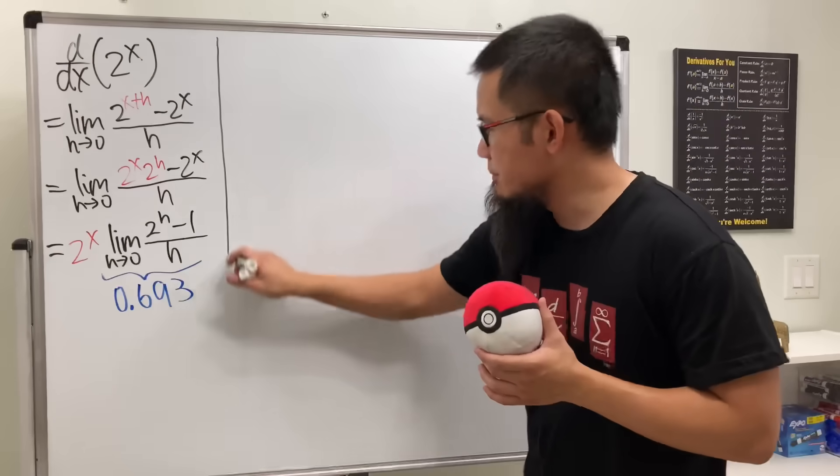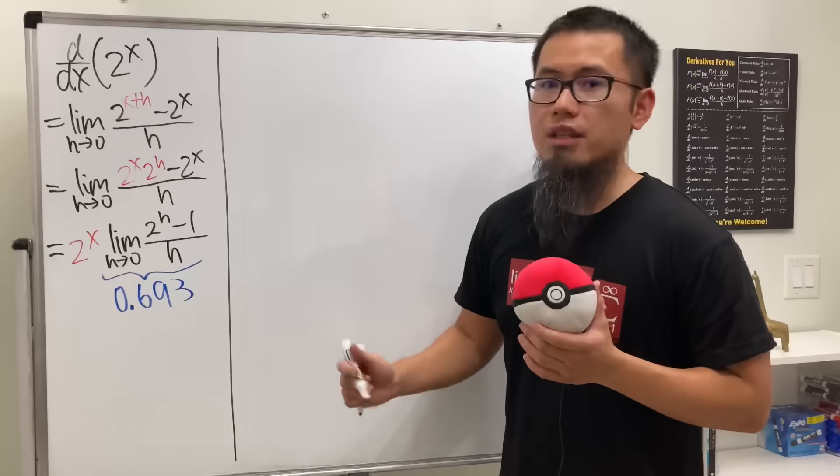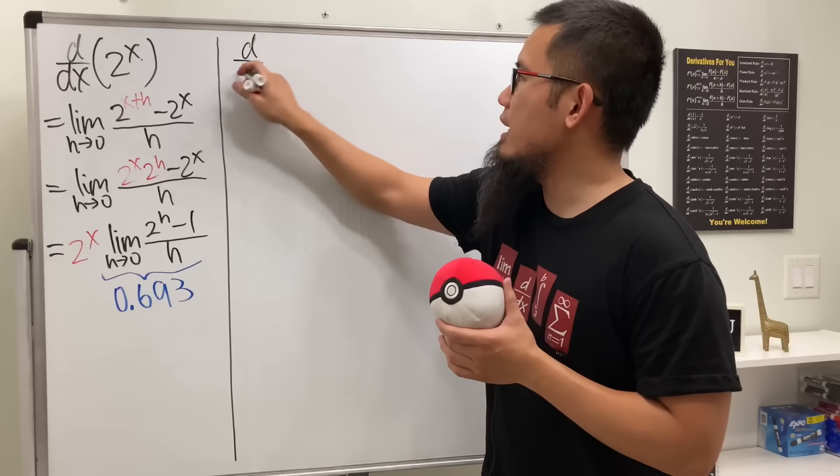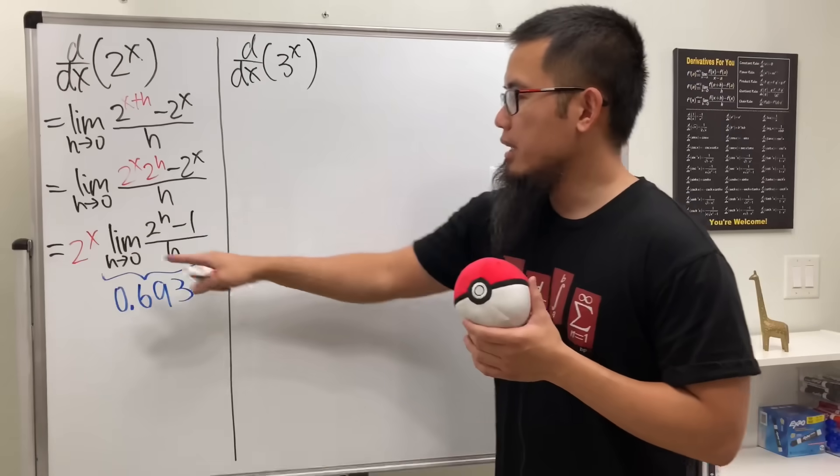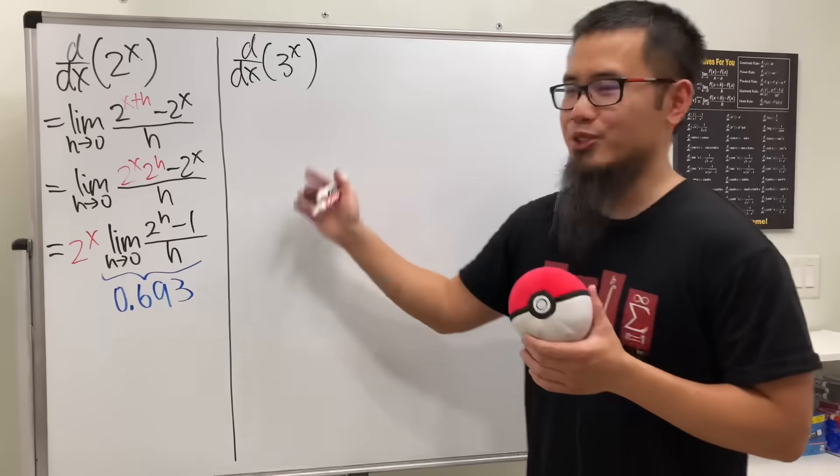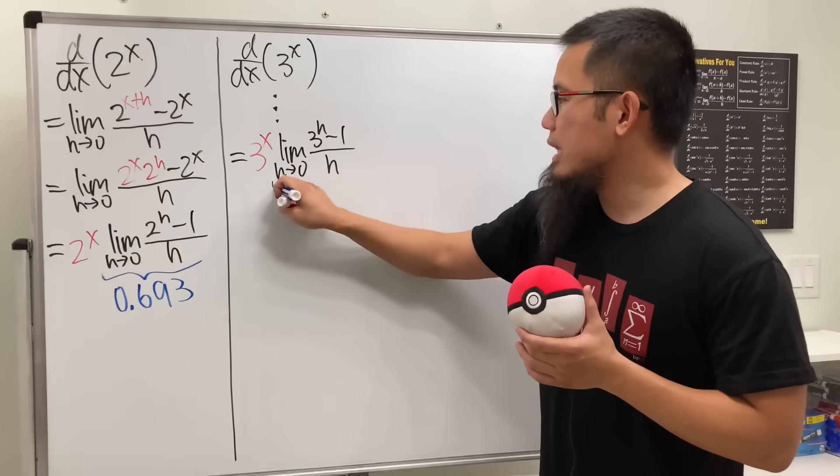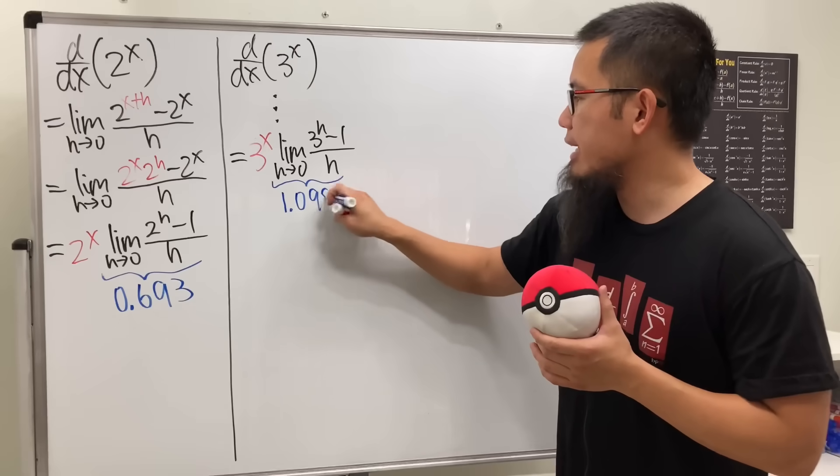Okay, let's try another one. Let's see if the other one is going to be any better. We did 2 to the x already. So let's try 3 to the x. So d/dx of 3 to the x. These steps are pretty much the same. In the end, the 2s, we can just change to 3s right here.